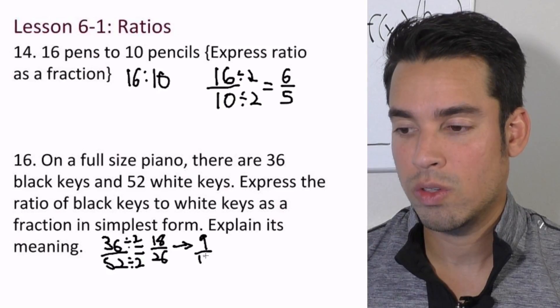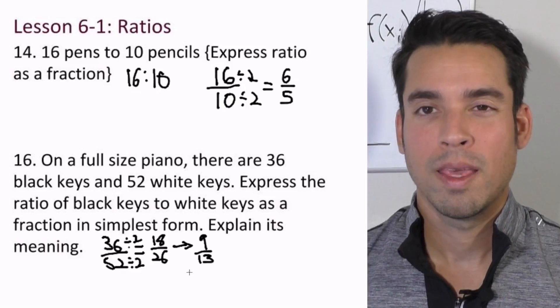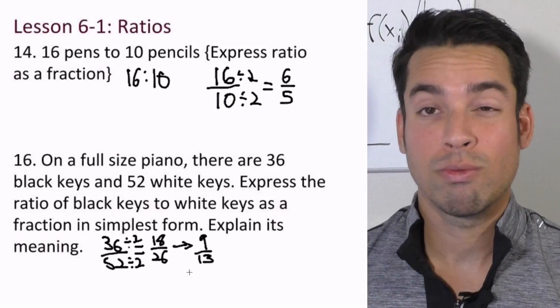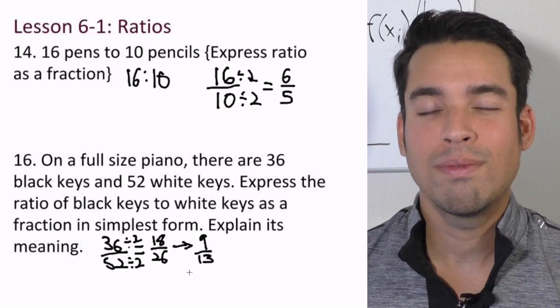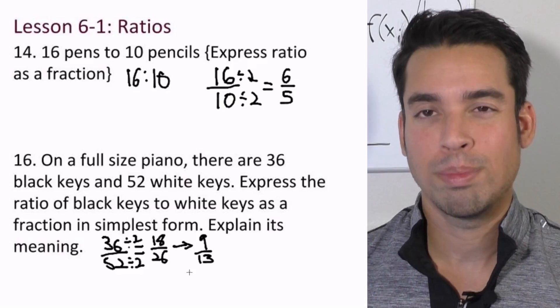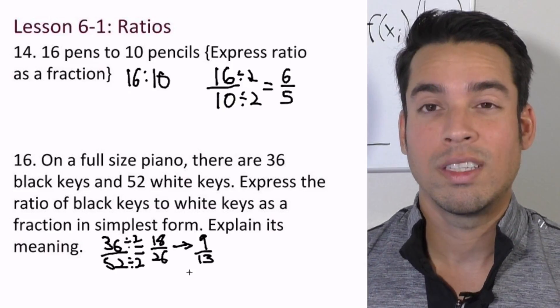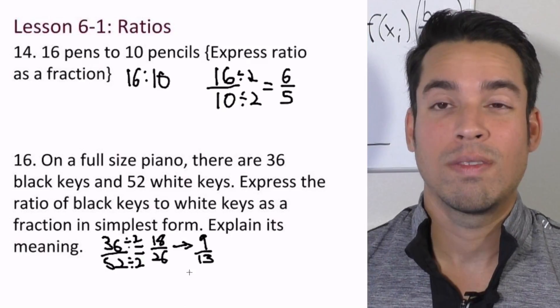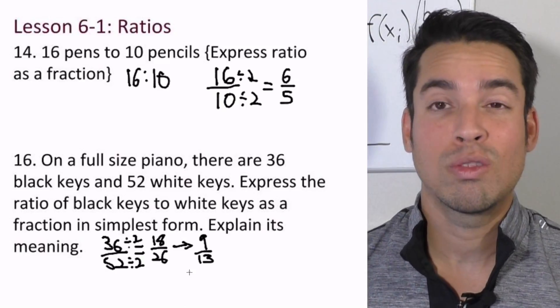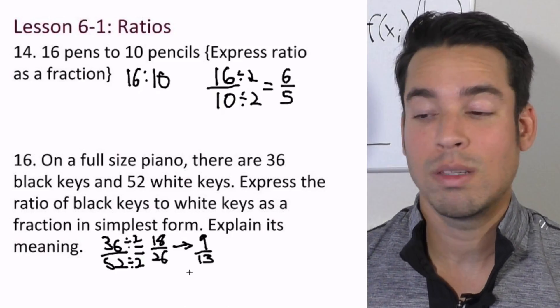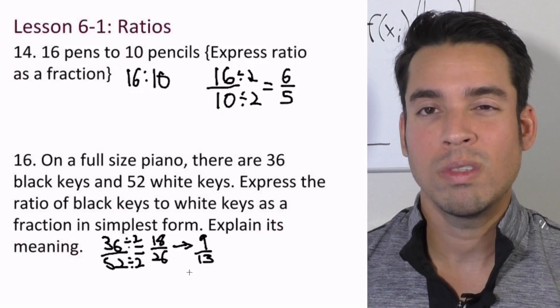What does that mean? It means that—and this is simplest form now—it means that for every 9 black keys on a piano, there will be 13 white keys. And then you'll have another 9 black keys, another 13 white keys. So that's basically what it means.